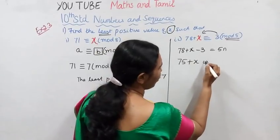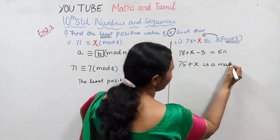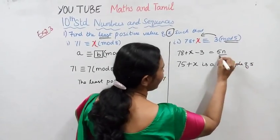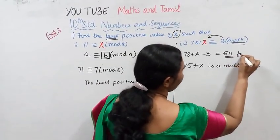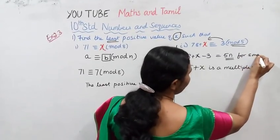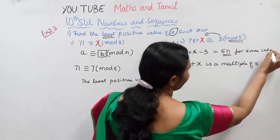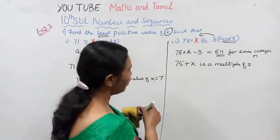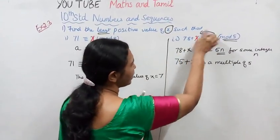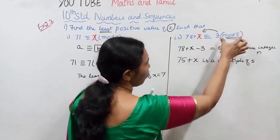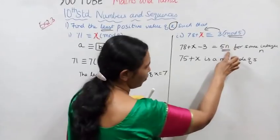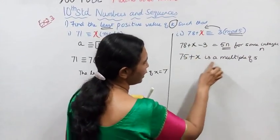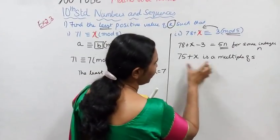In the correct like this, it will be mod 5, is a multiple, it's a multiple of 5. For some integer y, 78 plus x equal to mod 5. For some integer y, it was 78 minus 3, 75 plus x is a multiple of 5.